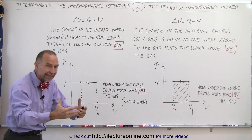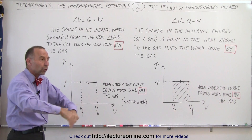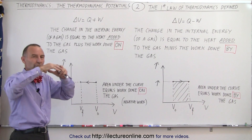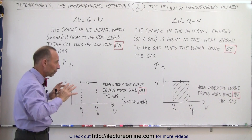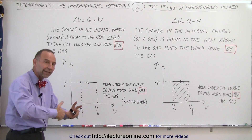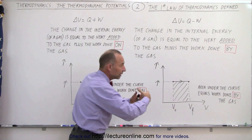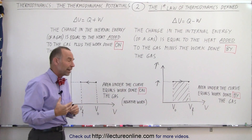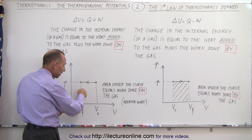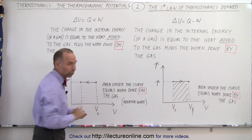Then work is done on the gas, which causes the internal energy of the gas to increase. So when we work on the gas by compressing it, the internal energy goes up. When we allow the gas to do work, the internal energy goes down. And essentially, the area underneath the curve represents negative work.